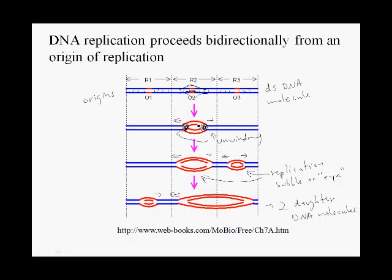The replication complexes are moving along the chromosome bidirectionally. But within each complex, DNA polymerase can make DNA in only one direction. We should not confuse the movement of complexes and unwinding in two directions with the DNA synthesis reaction itself, which can happen in only one direction — and this has some interesting consequences.